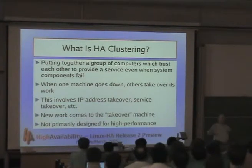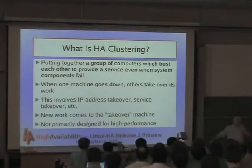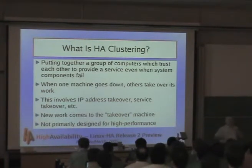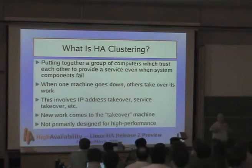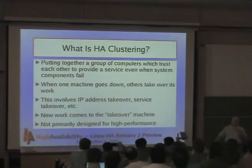High-level HA clustering is the idea of putting together a group of computers into a cluster, which basically means a number of machines acting as one. They can provide a service continually, or more or less continually, even when one system component fails — the whole machine fails, the disk fails, whatever. When one machine goes down, the others take over its work. This involves things like IP address takeover.